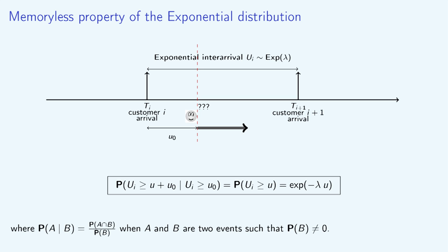If Ui is an exponential random variable with rate lambda, then the probability that Ui is greater than U plus U0, given that Ui is greater than U0, is equal to the probability that Ui is greater than U. This quantity equals the exponential of minus lambda U. This is the memoryless property of the exponential distribution.